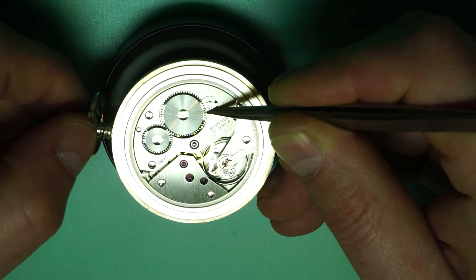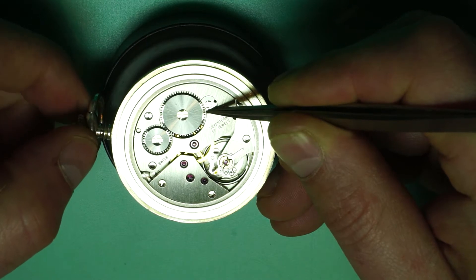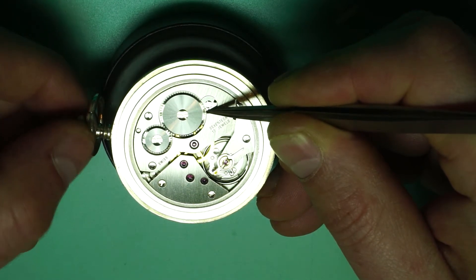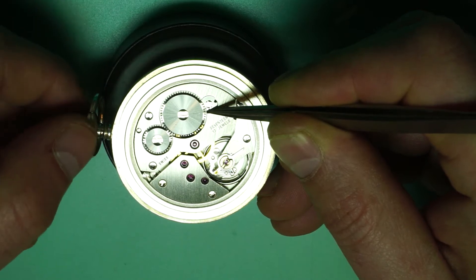Now the important thing here is when you're letting the mainspring down is not to let it down too quickly all in one foul swoop because otherwise you will damage some of the pivots of the train wheels.